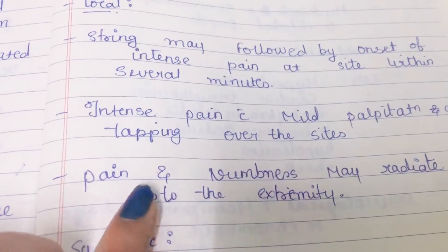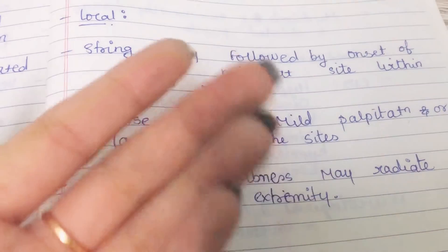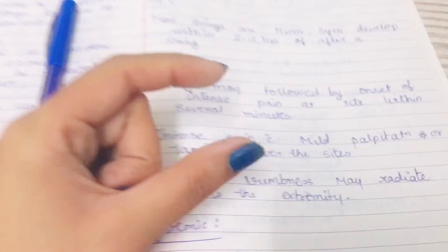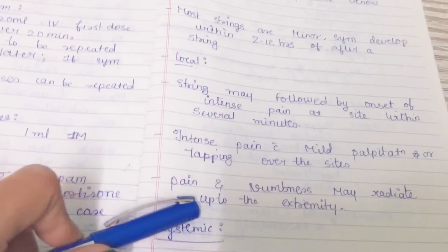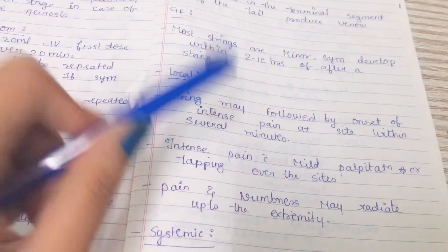The pain and numbness may radiate up to the extremities from the site of the bite. It can expand the pain. This was the general manifestation felt by the patient.